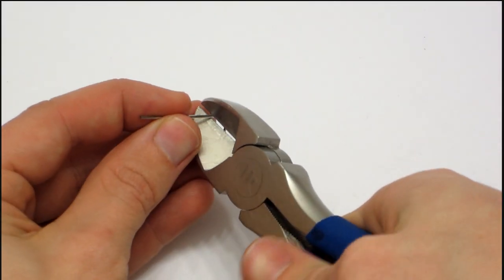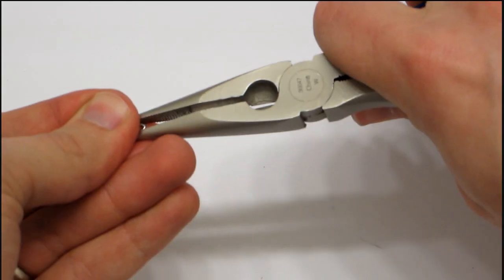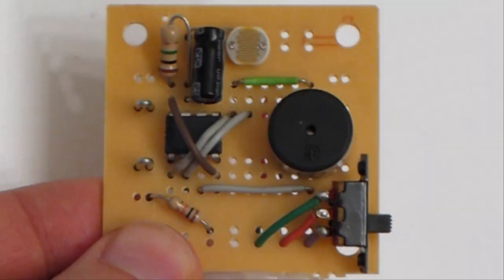To make the battery holder, cut off two pieces of paper clip about an inch long and fold them in half. These will hold the battery. When positioning them on the board, choose pinholes that are spaced just far enough apart to fit the battery in between them.